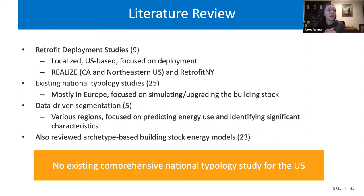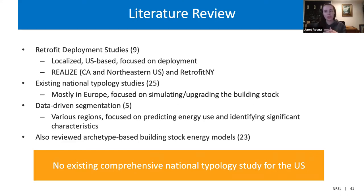We started by doing a literature review. We looked at U.S.-based typology studies that tended to be regional — for example, work done in California looking at multifamily building retrofits, and some work done in the state of New York. These were localized typology studies, very focused on near-term deployment. But really nothing national. The existing national typology studies — most of which you're likely familiar with — are in Europe. The Tabula Project covers many European countries, but nothing comparable was found for the U.S. The big takeaway from our literature review is that there's not an existing comprehensive national typology for the United States.